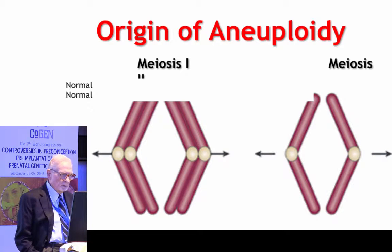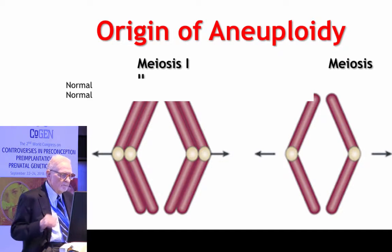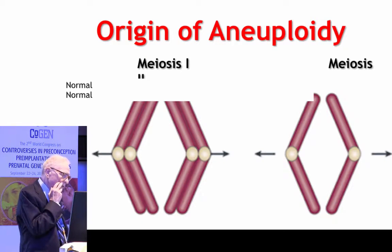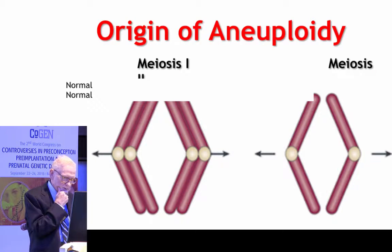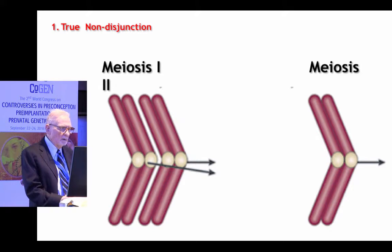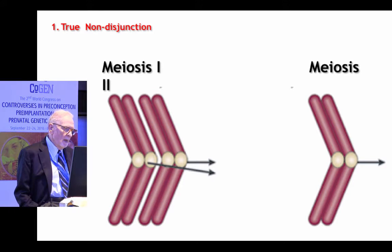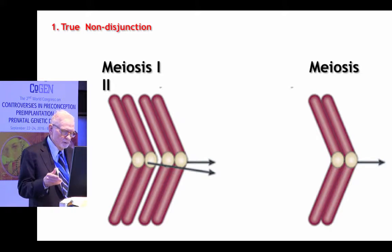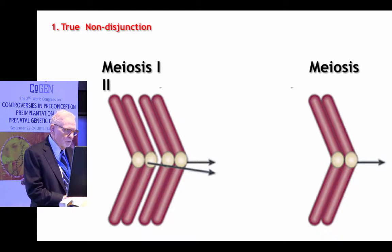The natural course of events is illustrated in this slide, emphasizing meiosis I and meiosis II, in which the homologous chromosomes separate in meiosis I and the chromatids of the centromeres separate in meiosis II. There are a number of different mechanical mechanisms that lead to aneuploidy. One form, called true non-disjunction, occurs when both homologous centromeres move in the same direction and then separate in meiosis II.